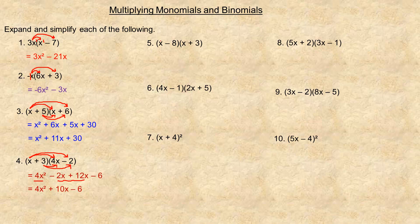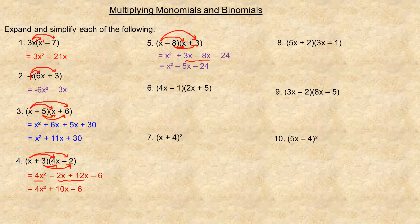For number 5, x times x is x squared, x times 3 is 3x, and negative 8 times x is minus 8x, and negative 8 times 3 is minus 24. Combining the like terms: 3x minus 8x is minus 5x. Remember your integers — 3 take away 8 is negative 5. Think of a temperature scale: if it was positive 3 and went down 8, it would be at negative 5.